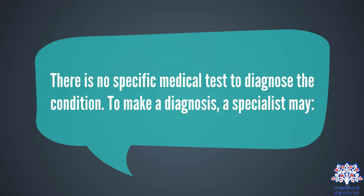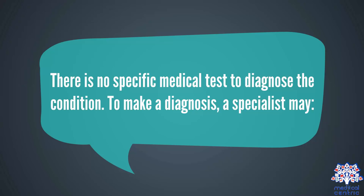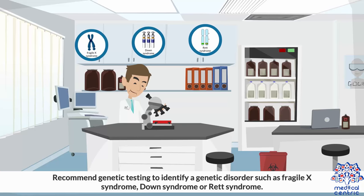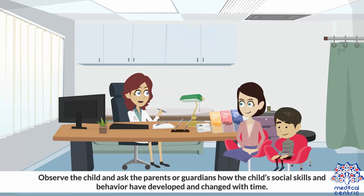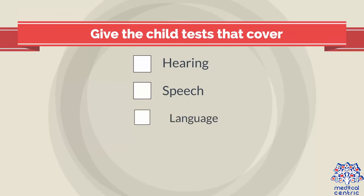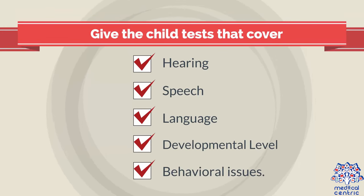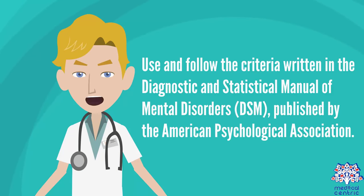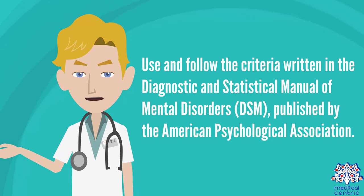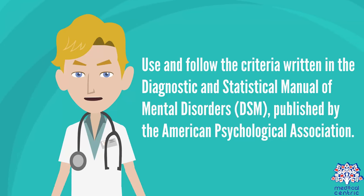There is no specific medical test to diagnose the condition. To make a diagnosis, a specialist may: recommend genetic testing to identify a genetic disorder such as Fragile X syndrome, Down syndrome, or Rett syndrome; observe the child and ask the parents or guardians how the child's social skills and behavior have developed and changed over time; give the child tests covering hearing, speech, language, developmental level, and behavioral issues; and use the criteria written in the Diagnostic and Statistical Manual of Mental Disorders, or DSM, published by the American Psychological Association.